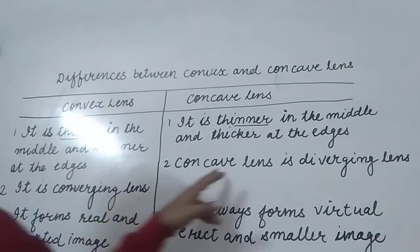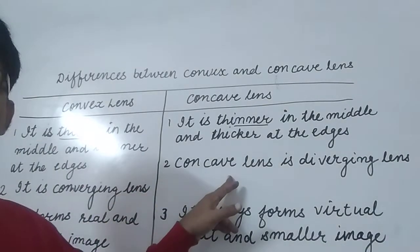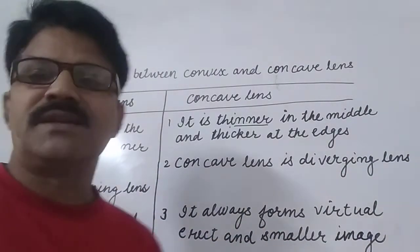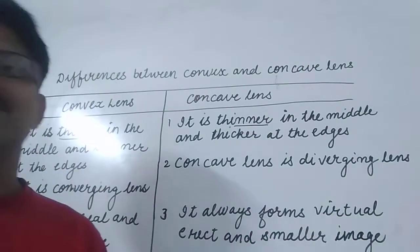Second one, it is the converging lens, it is diverging lens. Next, it forms the real and inverted image. It always forms the virtual erect and smaller image.